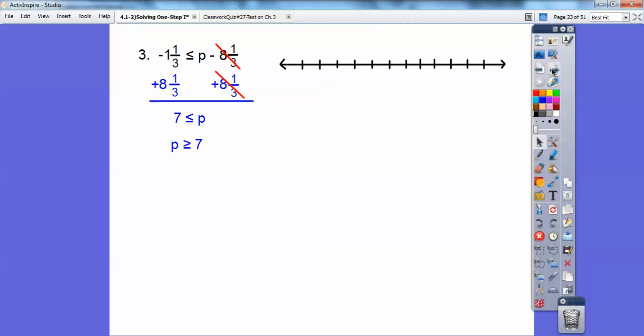There's my number line. To fit it in, I put 0 over here this time, and then 7 is way up here. So it's a solid dot on 7, and it goes that way because the arrow tells me to. Easy, huh?